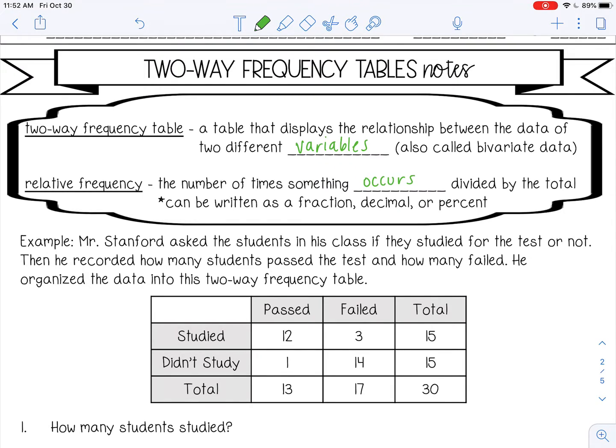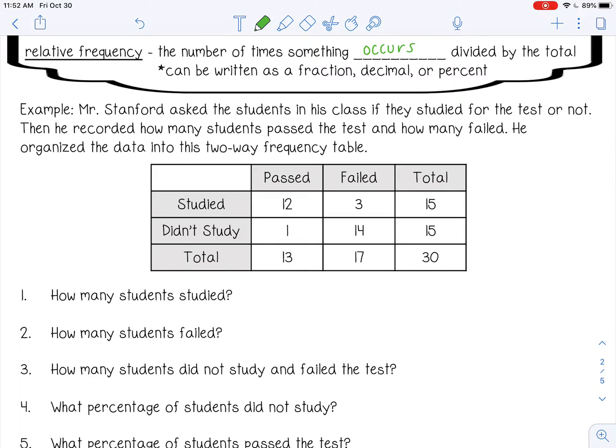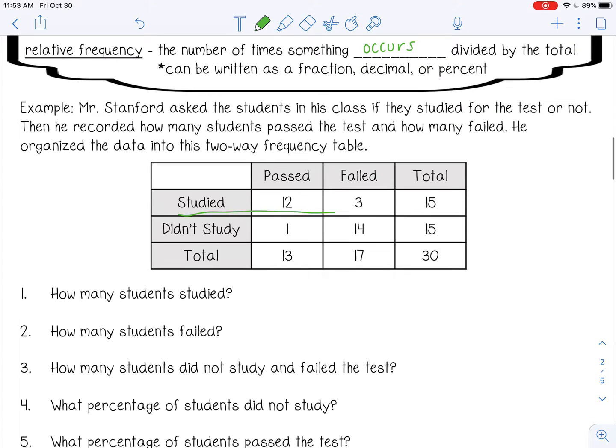Let's look at an example. Mr. Stanford asked the students in his class if they studied for the test or not. Then he recorded how many students passed the test and how many failed. He organized the data into this two-way frequency table. Here we have students that studied, students that did not study, students that passed and students that failed. The total number of students in his class is 30.